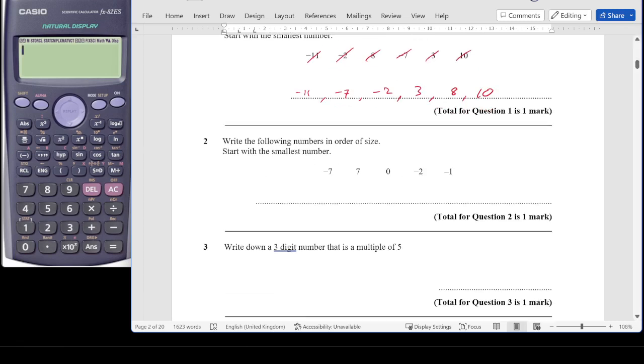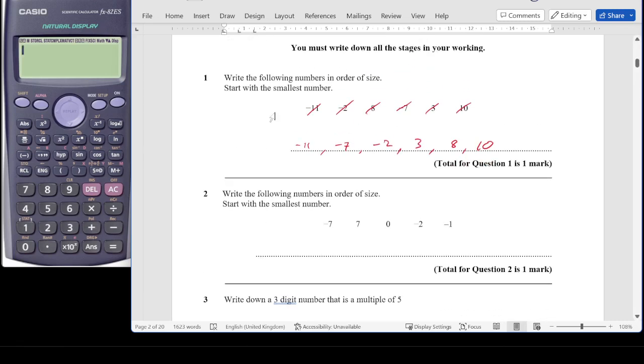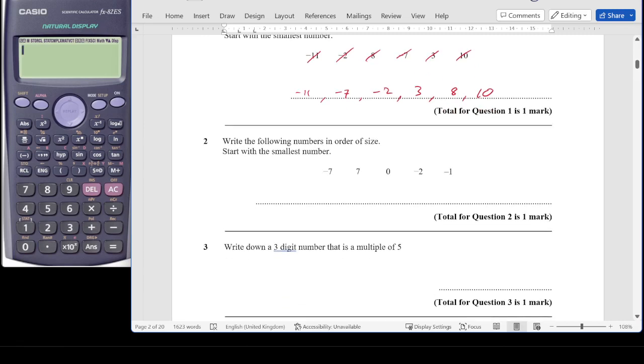Question 2, write the following numbers in size order starting with the smallest. So again, a similar question. We start with minus 7, minus 2, minus 1, 0, and then 7.